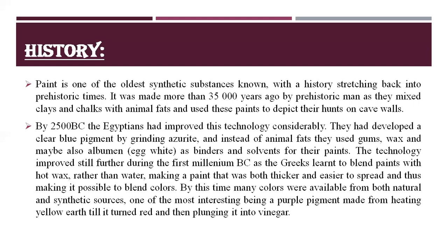Paint is one of the oldest synthetic substances, with a history stretching back into prehistoric times. It was made more than 35,000 years ago by prehistoric men, who mixed clays and chalks with animal fats and used these paints to depict their hunts on cave walls. By 2500 BC, the Egyptians had improved this technology considerably — they developed a clear blue pigment by grinding azurite, and instead of animal fats, they used gums, wax, and possibly albumin (egg white) as binders and solvents.